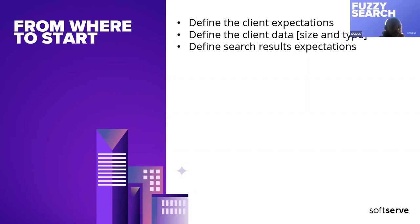Second item: we should define the data we are working on — its size and type — and we will discuss later what type of database. Also, we should define the search result expectation, and this is very important. We will talk about each point in detail. These points can be added as acceptance criteria for your feature later when you start to work on it.